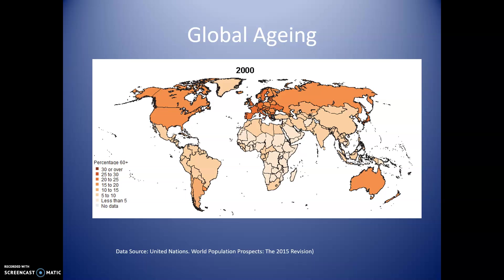Is the world aging? The next three graphics will prove the point. This is what the world looked like in 2000. The darkness of the color of each country on the map gives us an idea of the percentage of people aged 60 and over. As you can see, in 2000 most of this was concentrated in North America, Europe, and Australia.